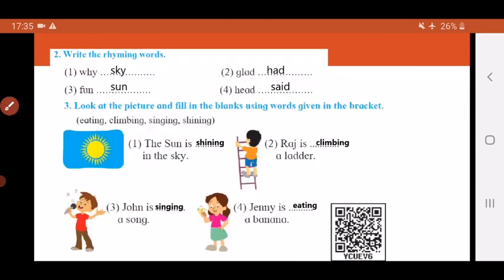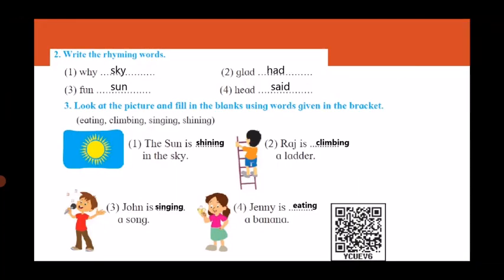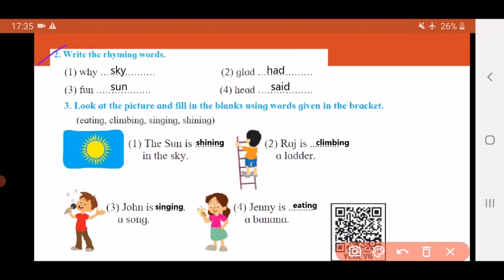Now let's answer. Write the rhyming words. Rhyming words are those words which have the same end sound. Why? The rhyming word is sky. Glad - had. Fun - sun. Head - said. So these were the rhyming words.